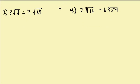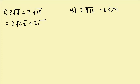Alright, let's take a look at another example: 3 square root of 8 plus 2 square root of 18. Now the radicals aren't the same, but if you notice, square root of 8 we can simplify, and we can simplify square root of 18. So this is equal to 3 times the square root of 4 times 2, plus 2 times the square root of 9 times 2.